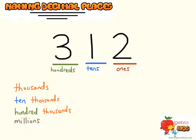Some other ones you need to know are thousands, ten-thousands, hundred-thousands, and millions, and so on to infinity. So these are the basics for naming place values.